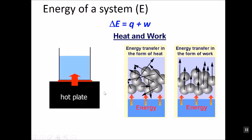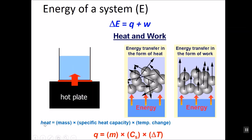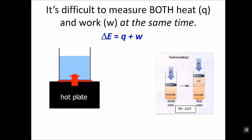How would you calculate heat? If you wanted to find out how much heat energy went into a system, you could put a hot plate on it and start to see a change in temperature as you added energy. We can calculate the heat q if we know the mass of our system, the specific heat of it, and the temperature change — the final minus the initial. The problem is that it's really difficult to measure both heat and work at the same time, so getting the total energy for a chemical reaction is challenging.